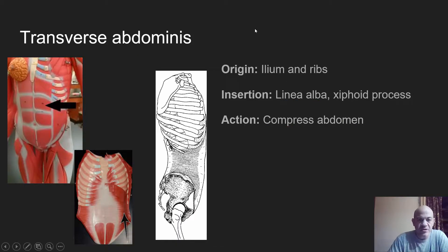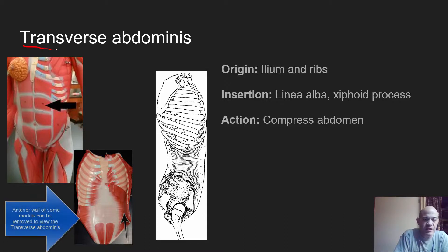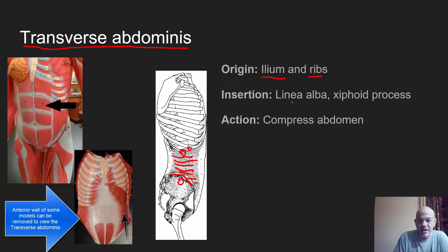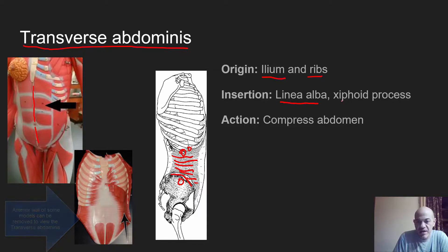The next muscle is the transverse abdominis, the innermost layer. The internal obliques are not on your lab list, but be aware there is a middle layer. The name is based on the direction that the fibers travel on the transverse plane. The origin is going to be the ilium and the ribs, and the insertion is going to be the linea alba and the xiphoid process. The action is to compress the abdomen.